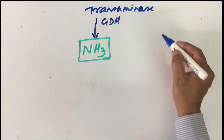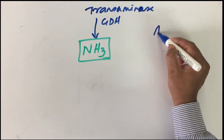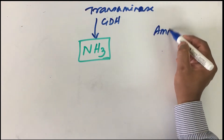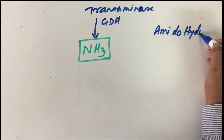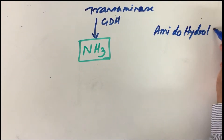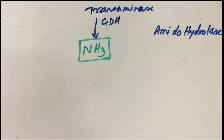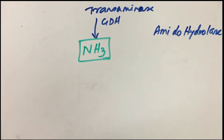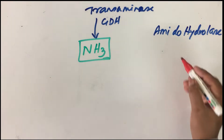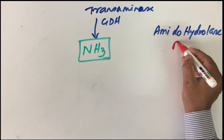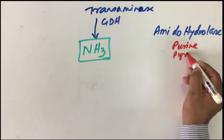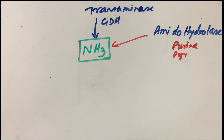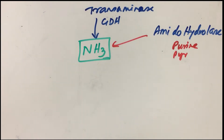The second source of ammonia is from enzymes known as amidohydrolases. These amidohydrolases are basically removing amino groups from purines and pyrimidines. So that becomes another source of ammonia.